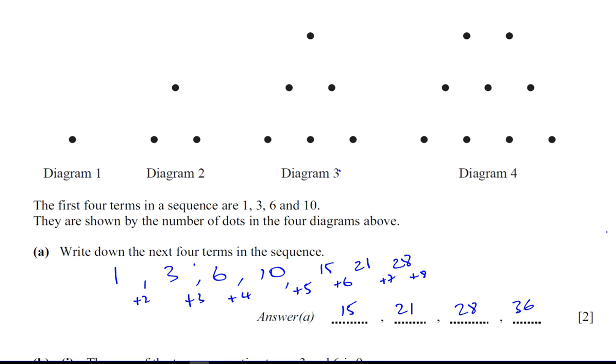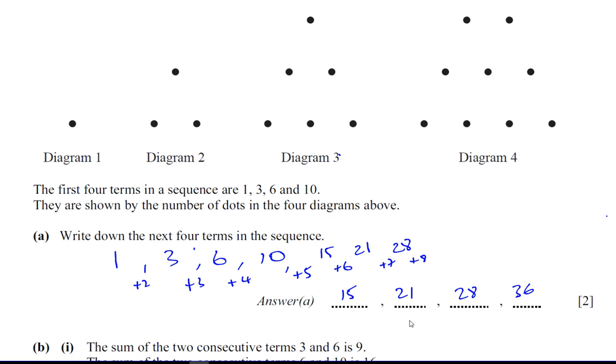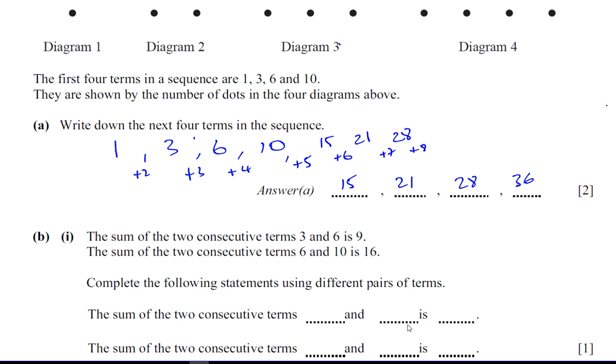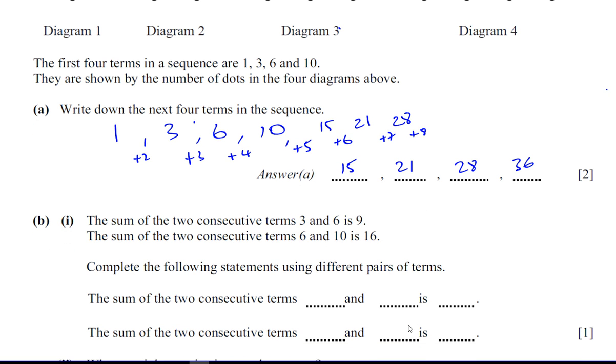So those are the next four numbers in the sequence. This is the sum of the two consecutive terms in the sequence: 3 and 6 is 9, the sum of the two consecutive terms 6 and 10 is 16. The sum of the two consecutive terms blank and blank is blank.